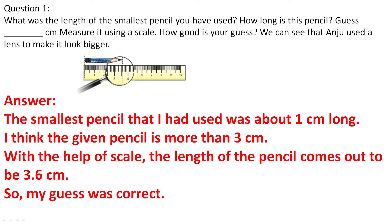Question number 1: What was the length of the smallest pencil you have used? How long is this pencil? First we guess the length in centimetres, then measure it using a scale. We can see that Anju used a lens to make it look bigger. The length of the pencil is kept from 0 to in between 3 and 4 — that means 3.6.